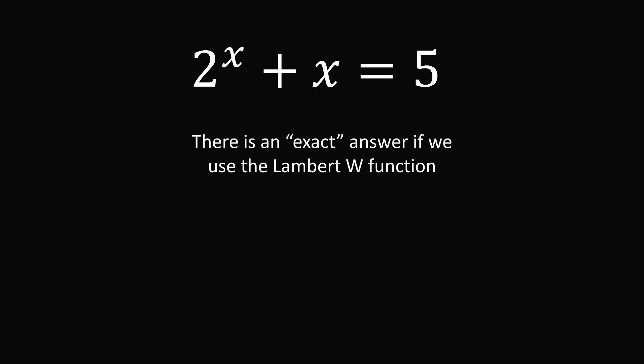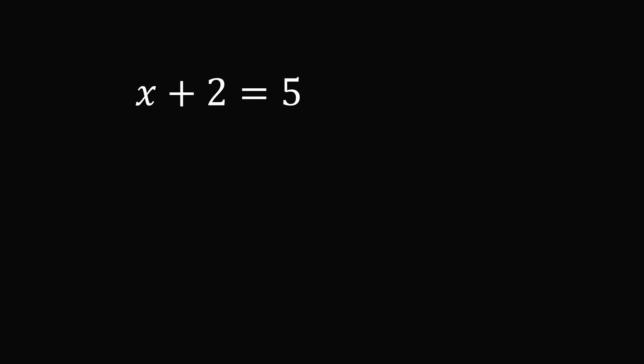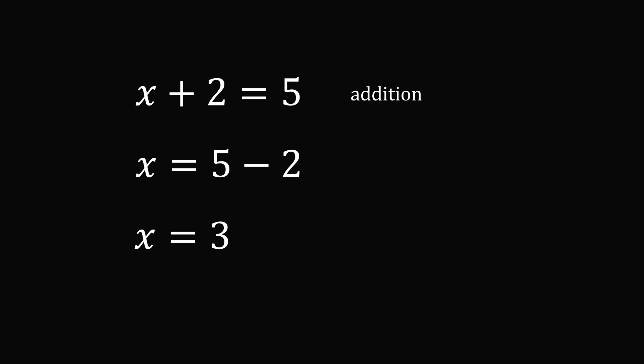There is a way we can write an exact answer if we use something called the Lambert W function. I want to motivate the Lambert W function by thinking about how we solve equations. If you want to solve x plus 2 equals 5, you subtract 2 from both sides so that x equals 5 minus 2, which means x equals 3. The addition is undone by subtraction and we can solve for x.